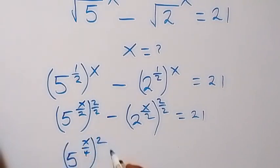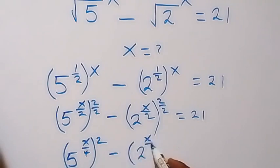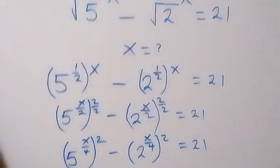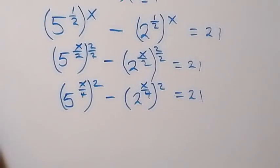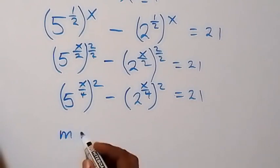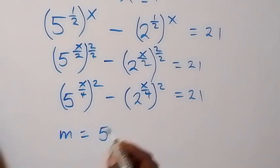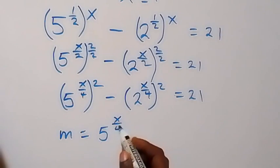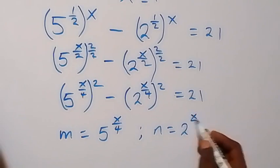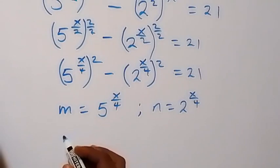Then raised to power 2, minus, in bracket, 2 raised to power x over 4, then raised to power 2, equals to 21. Then in the next step we can use a letter to represent 5 raised to power x over 4. So let m be equals to 5 raised to power x over 4, and n be equals to 2 raised to power x over 4. Then this equation becomes m squared minus n squared.